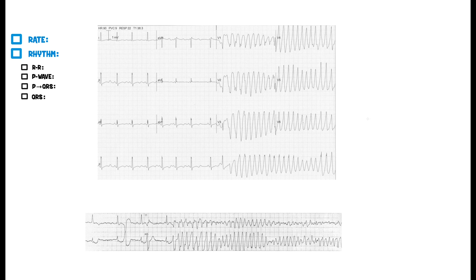First thing: rate. How do we determine the rate? Let's take a look at our rhythm strip in lead two. What's really interesting is you're going decent — one, two, three — so 300, 150, 100, a little under 100. But then boom, you start moving super fast, going about 300 beats per minute between each of these R-waves.